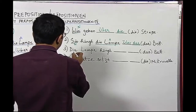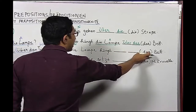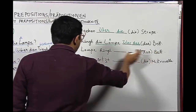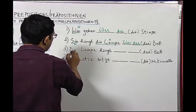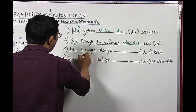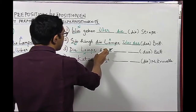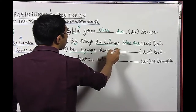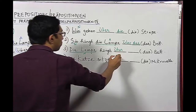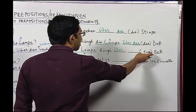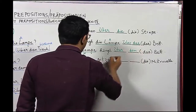Sentence number three: Die Lampe hängt über dem Bett. Compared to sentence two, here we have only the nominative 'die Lampe'. In this case 'hängen' is a dative verb, so we use 'über' in the dative case. Since 'das' becomes 'dem' in dative, we write 'über dem Bett'.